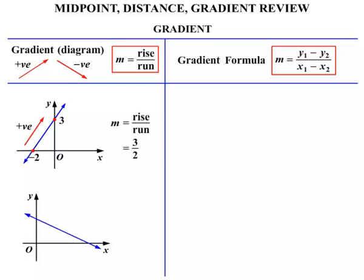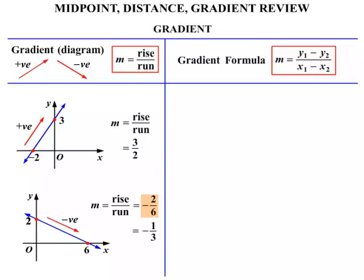Next one. The Y intercept is 2 and the X intercept is 6. Gradient equals rise over run. Now it's going downhill, so it's negative — the first thing we write is minus. The rise is 2, over the run which is 6. So we get minus 2 over 6. We can simplify that to minus 1 over 3, or minus one-third.